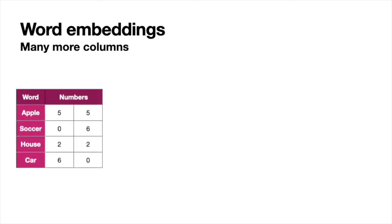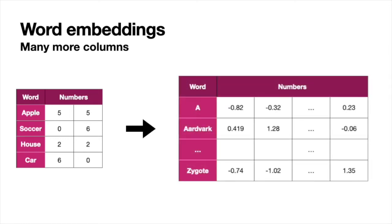The word embedding we saw at the beginning is pretty simple — just two numbers per word. In general you'd have lots of rows for all the words that exist, and each word is associated with a lot of numbers, so the table has many columns. The Cohere embedding has 4096 columns, meaning each word gets associated with a vector of 4096 numbers. Similar words will have similar numbers, and each column represents some property of the word — some we can interpret as humans, others we can't, but the computer can use them to get great results.